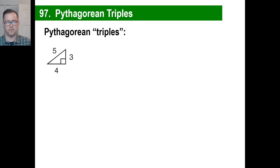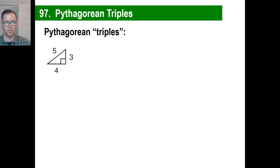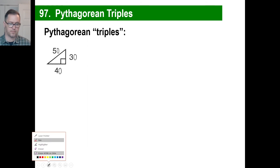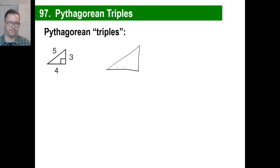These are called triples. It's a strange and neat thing — we know a 3-4-5 right triangle works. You can multiply all three numbers by any number and it still works. Multiply by 10: 40 squared plus 30 squared is 50 squared — that actually works. Multiply by three: four times three is 12, three times three is nine, five times three is 15, so 12 squared plus nine squared is 15 squared — and that works too. You can multiply by any number.